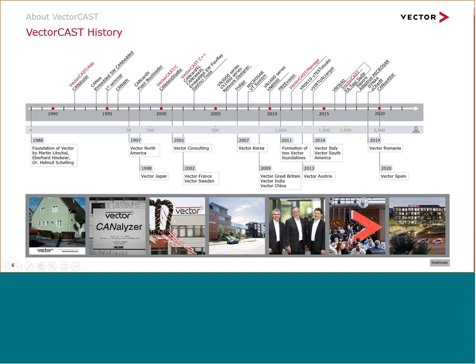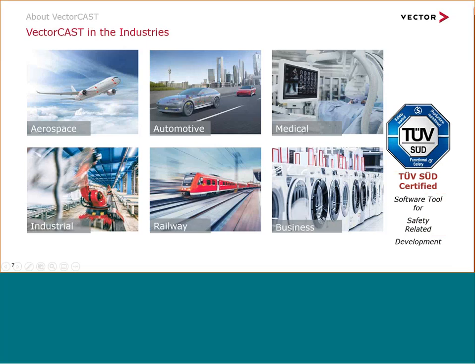Looking at the history of the VectorCast product, the first version was already launched in 1992. It was initially developed to automatically determine code coverage for safety-critical embedded software in the aerospace industry. In the following years, it was extended by a unit test tool and received numerous extensions and improvements. The first version supported ADA, but today VectorCast also supports C and C++ up to version 17. VectorCast is widely used in many industries like automotive, medical, railway, and others.